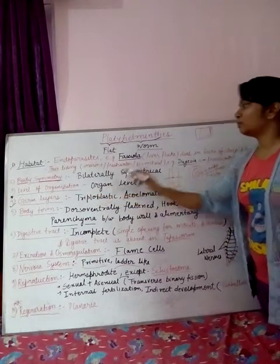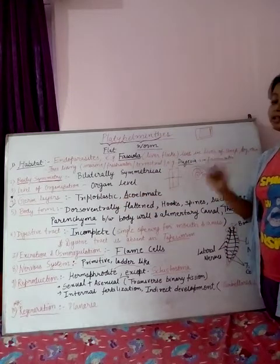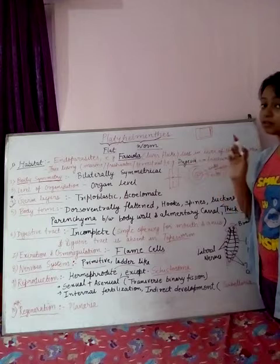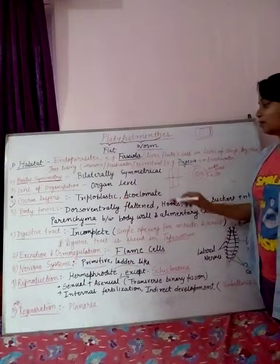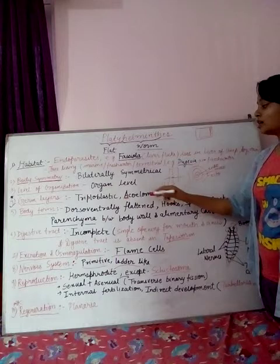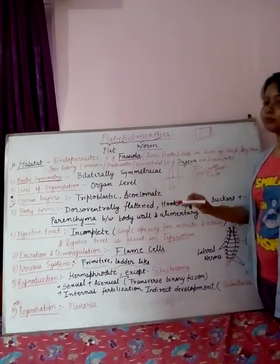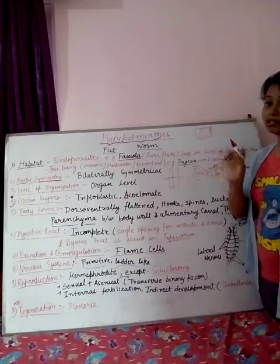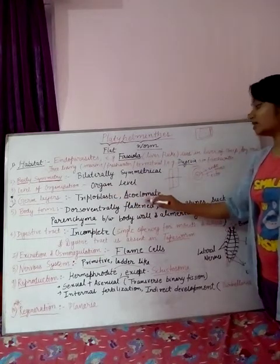Germ layer is triploblastic. Platyhelminthes is also the first phylum where the triploblastic germ layer is found, meaning all three layers — endoderm, ectoderm, and mesoderm — are present for the first time here. However, because these three layers appear for the first time, the coelom is not well developed, so they are acoelomate — they do not have a coelom. This is a major characteristic feature of Platyhelminthes: they are triploblastic as well as acoelomate.